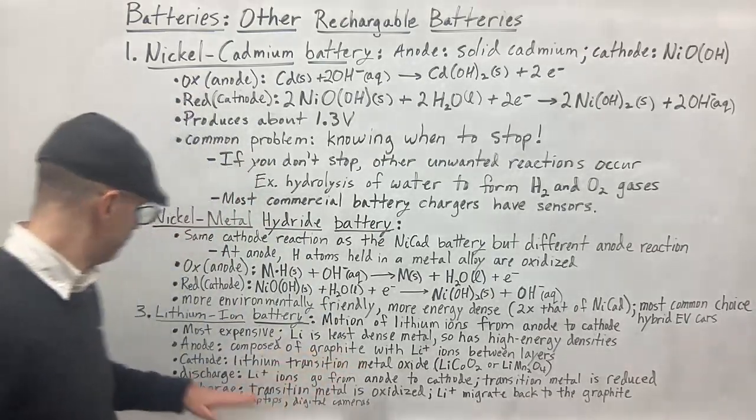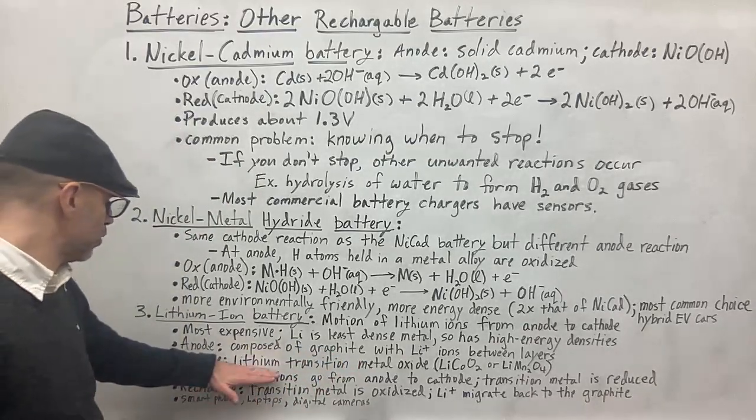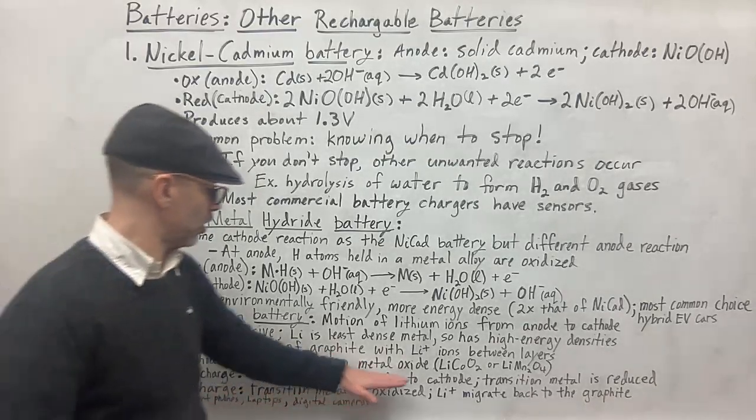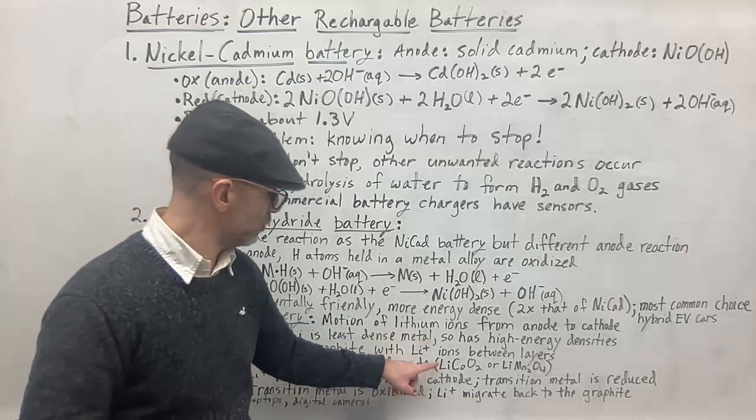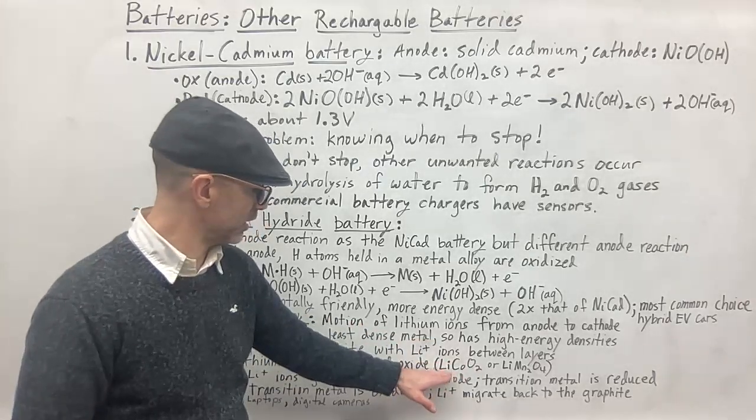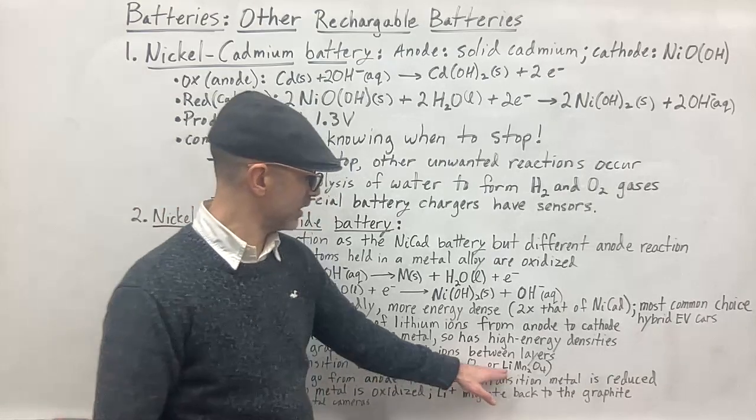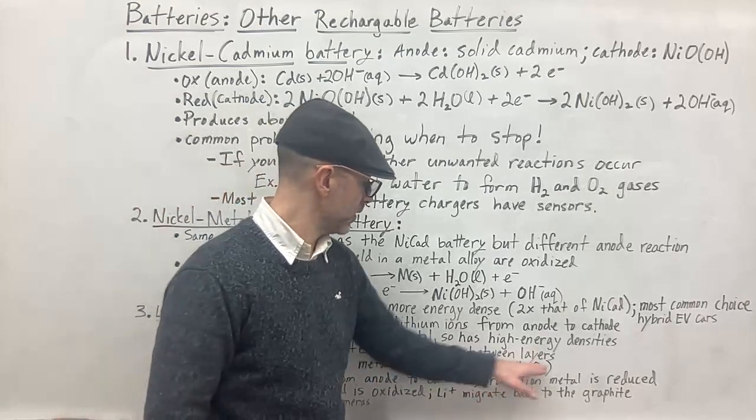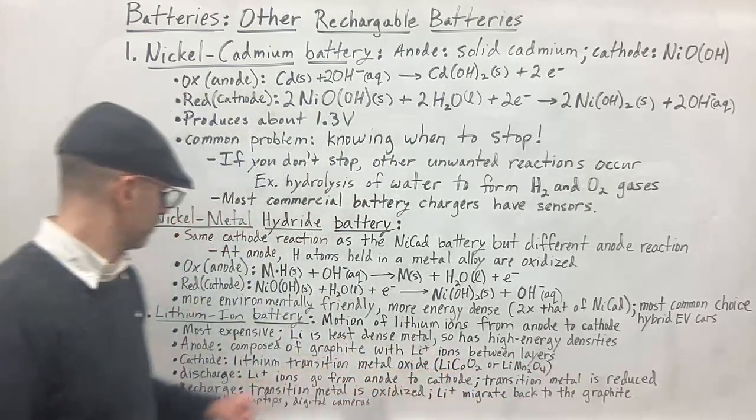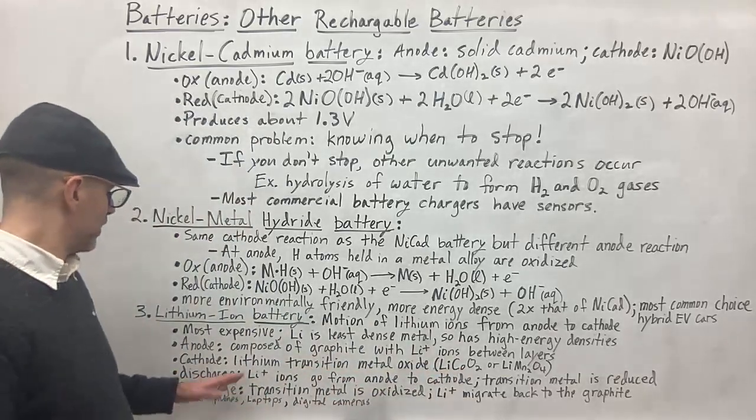So then the cathode is going to be your lithium transition metal oxide. So here you've got a couple of examples. You got lithium cobalt O2, LiCoO2, or you got lithium with manganese oxide.